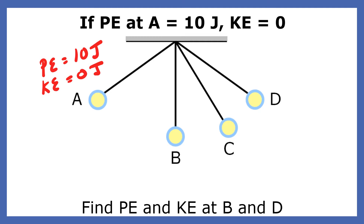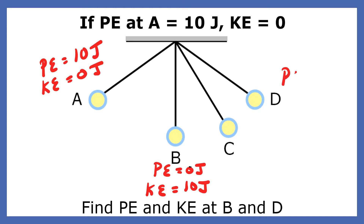If the potential energy at A is 10 joules and the kinetic energy is 0 joules, what is the potential and kinetic energy at B and D? When the pendulum bob reaches the bottom, the pendulum's height is 0, there's no potential energy, and it's all kinetic energy. When the pendulum reaches the other side at point D, it's at the maximum height, there's no more kinetic energy, and it's all potential energy.